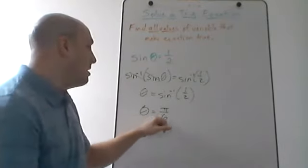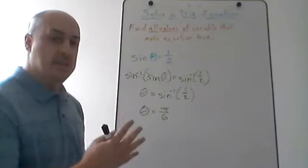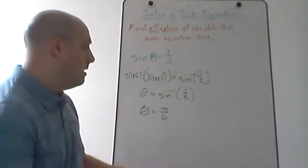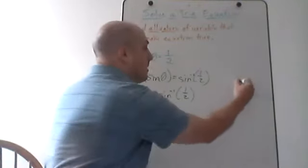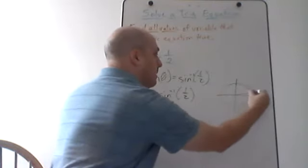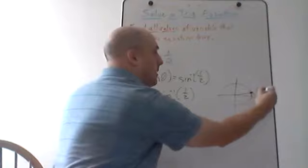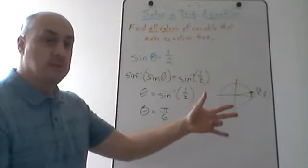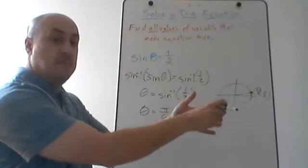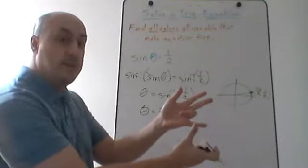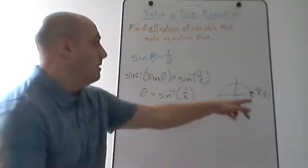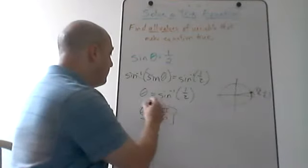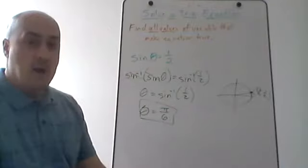So I get theta equals pi over 6. That corresponds to a point on the unit circle where the angle is pi over 6 and the terminal point is root 3 over 2 comma one half — which I can get from my trig hand. The ring finger corresponds to pi over 6; number of fingers above is the x-coordinate, that's root 3 over 2; fingers below is the y, that's one half. Since sine is my y-coordinate, at pi over 6, sine of theta equals one half.